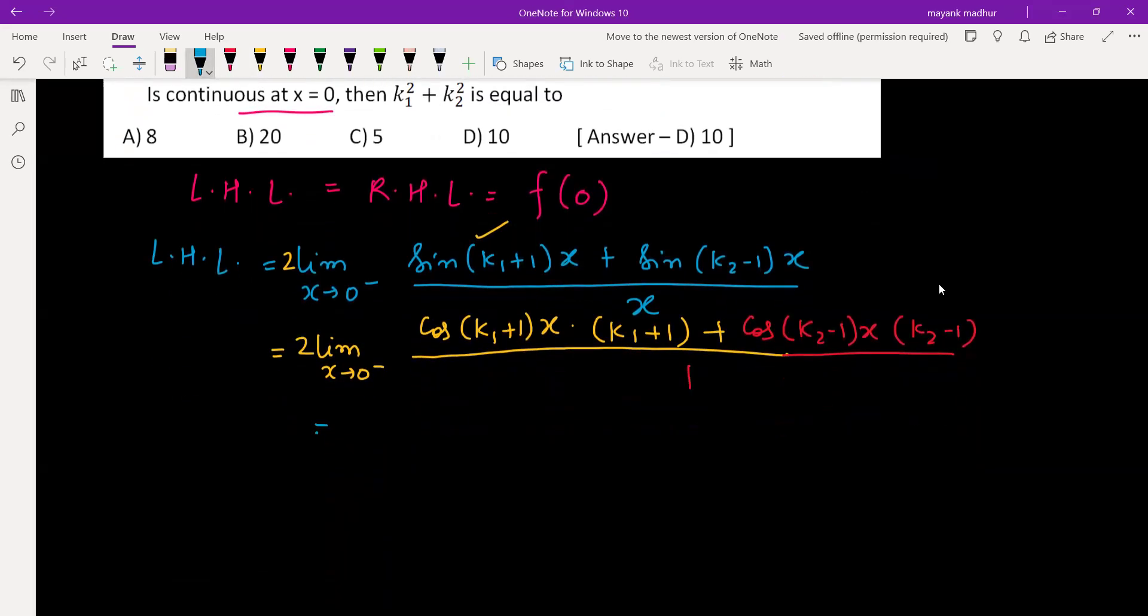Now you put x = 0, you will be getting cos(0) is 1 and k₁+1, so k₁+1, and similarly cos(0) is 1 and k₂-1, so we get it as 2(k₁+k₂). This is your LHL. Now RHL, let's go for RHL.